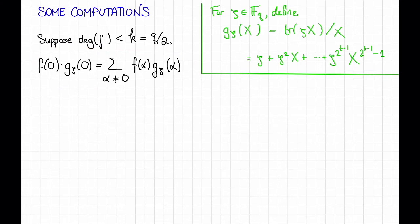Now, let's replace g of zeta with its definition. So we have f of 0 times g zeta of 0. Well, we can see from here that g zeta of 0 is just equal to zeta. So f of 0 times zeta is equal to the sum over all alpha not equal to 0 of f of alpha times, now I'm going to plug in this definition of zeta, the trace of zeta times alpha divided by alpha. Okay, great. So far, so good.